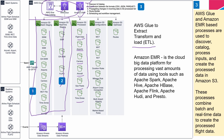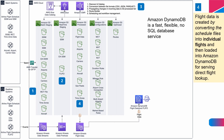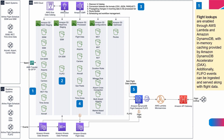Flight data is created by converting the schedule files into individual flights, and then they get loaded into Amazon DynamoDB for serving direct flight lookup. Amazon DynamoDB is a NoSQL database service. The benefit of DynamoDB is that it is always stored on SSD storage, so it is fast. When flight lookup requests come in, these requests are handled through AWS Lambda and Amazon DynamoDB, with in-memory caching provided by DAX — Amazon DynamoDB Accelerator. Additionally, real-time FLIFOR events can be ingested and served along with flight data.